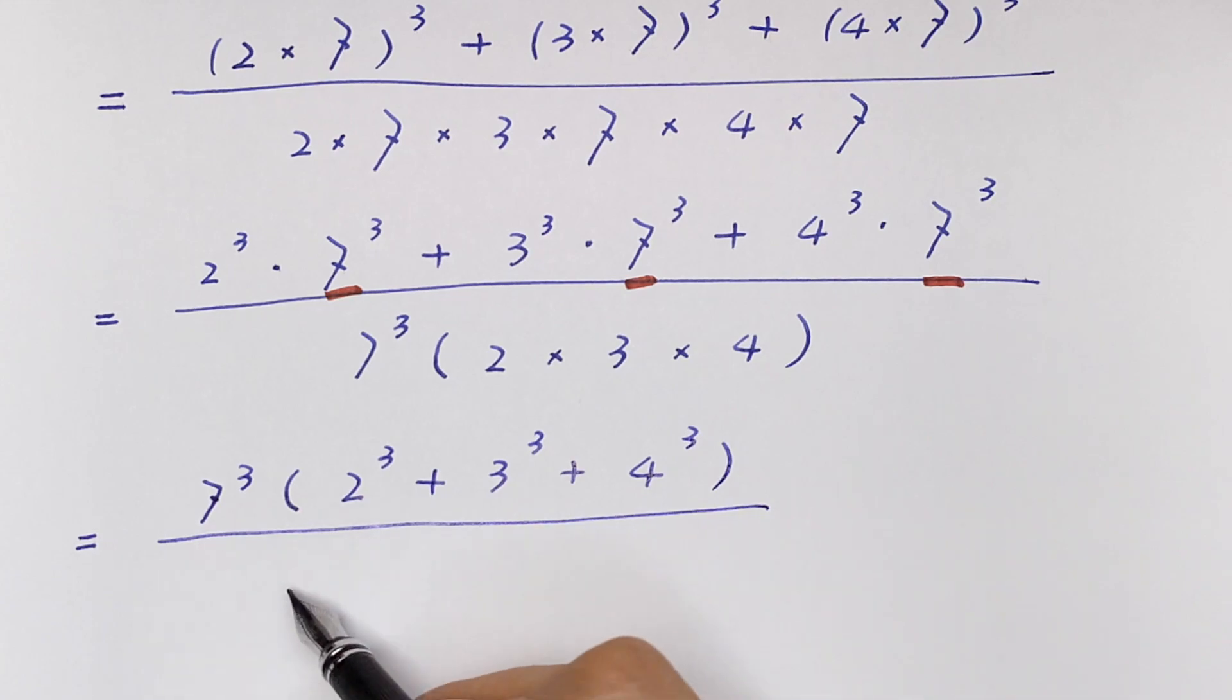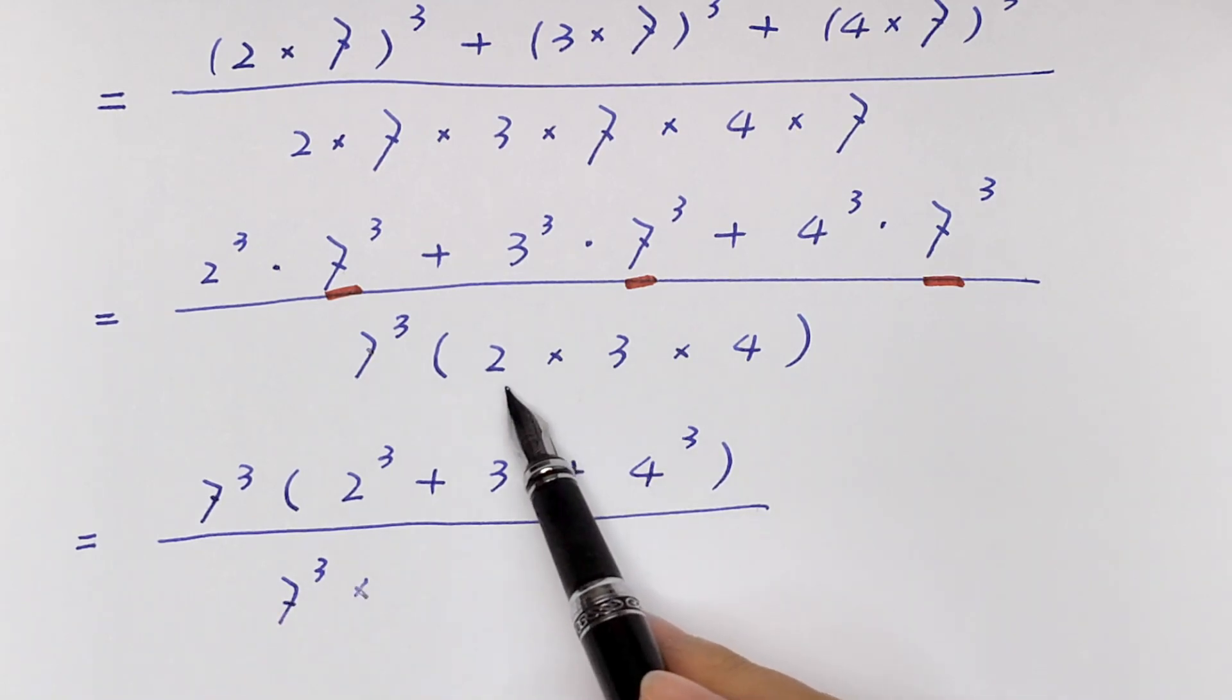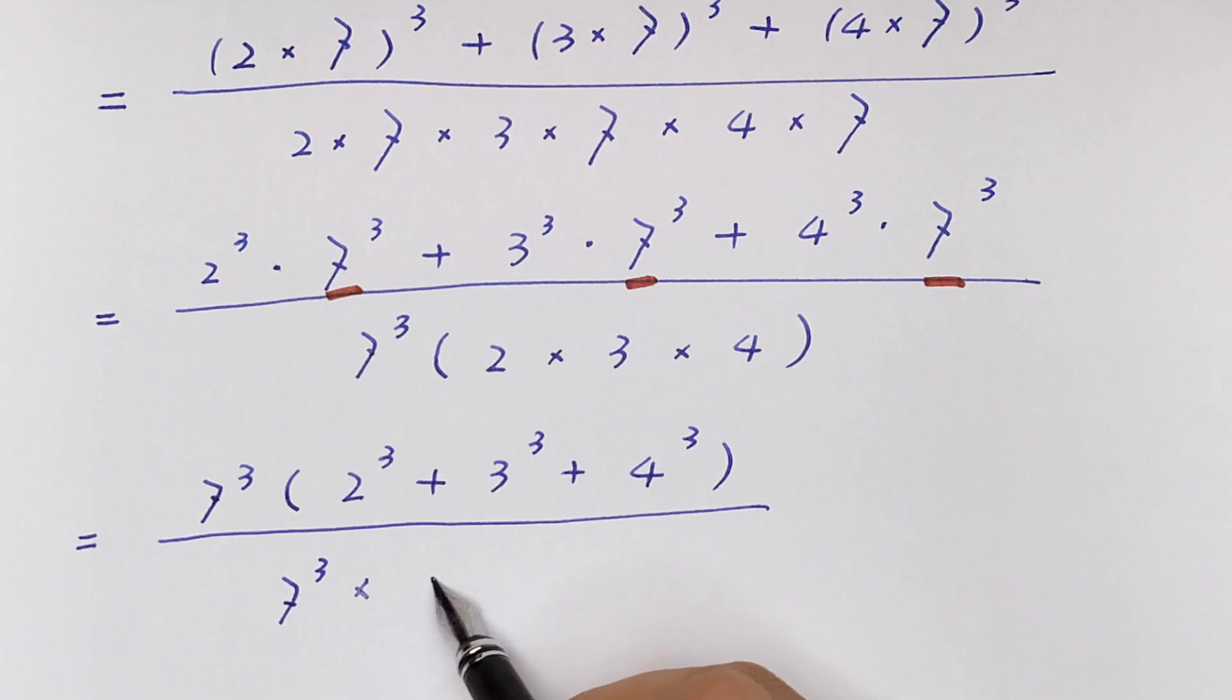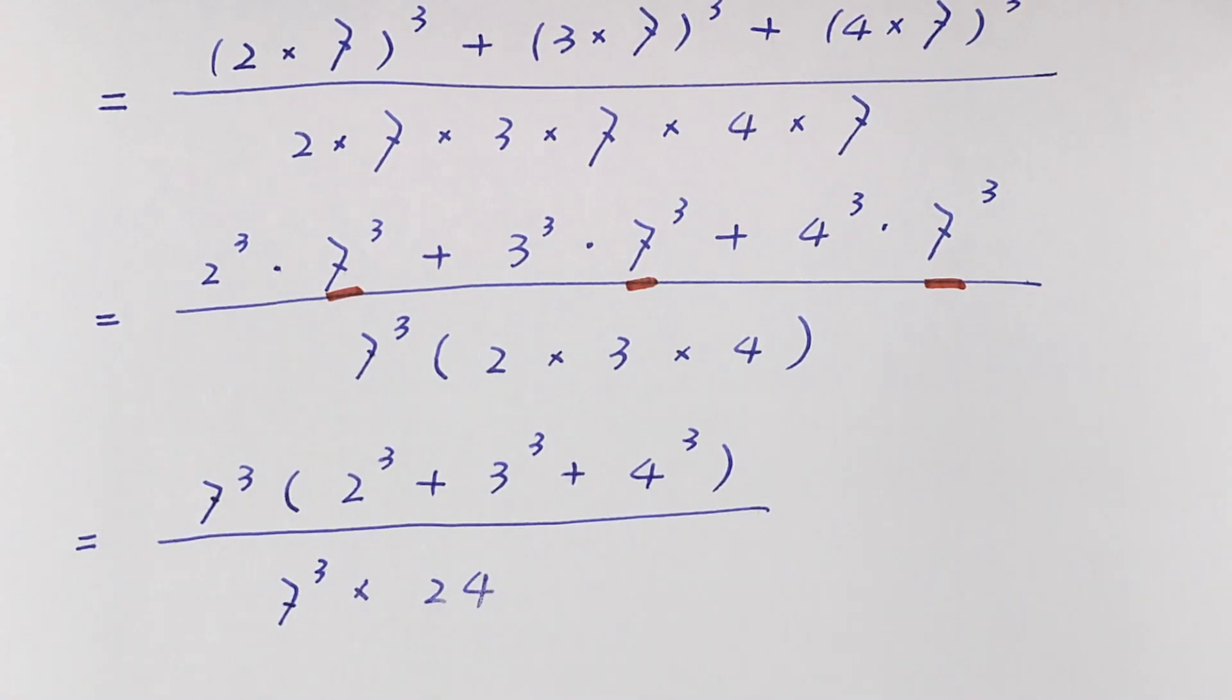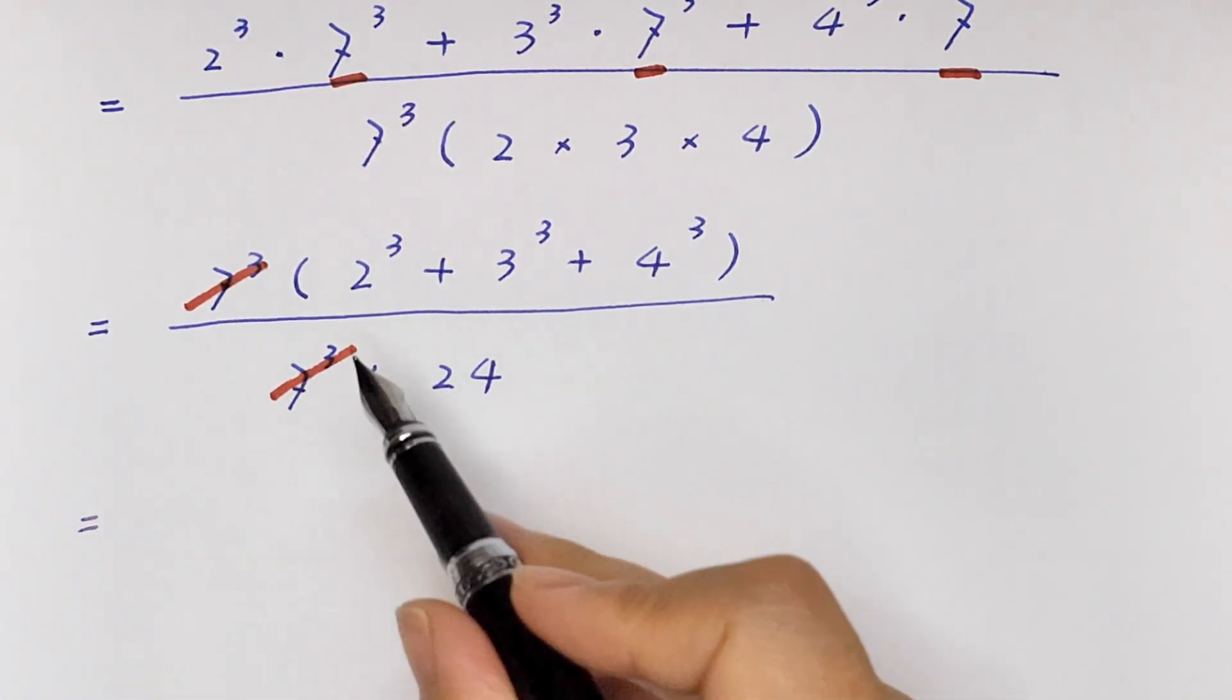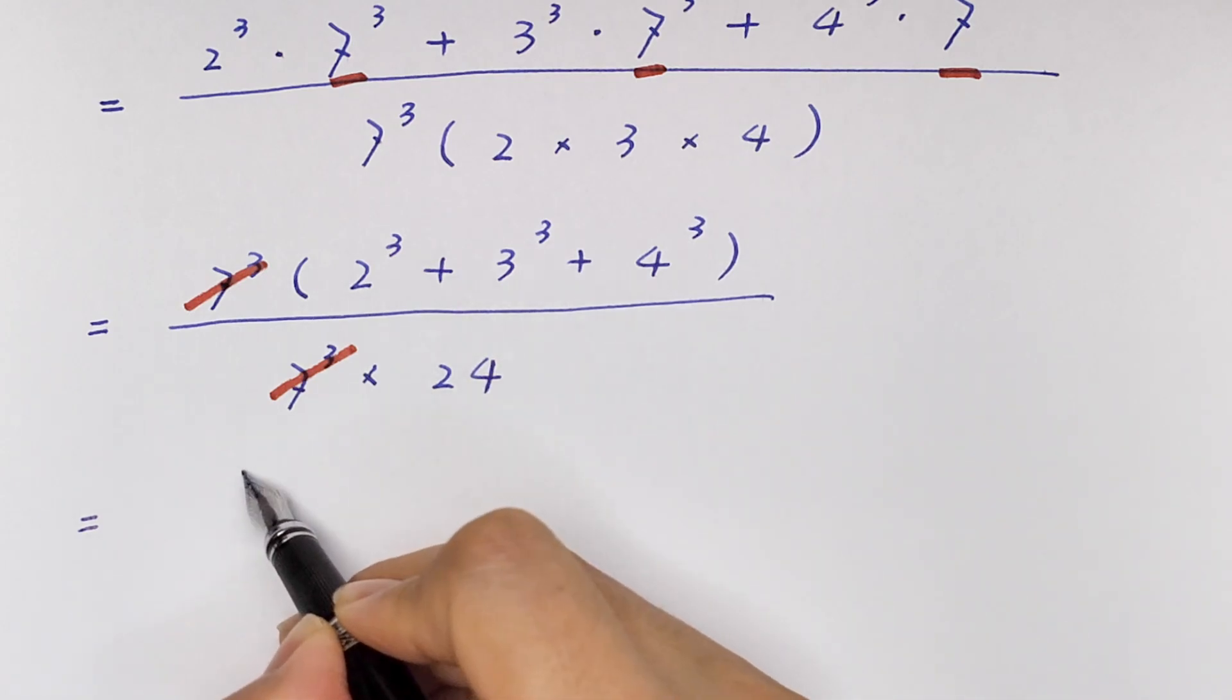Divided by 7³ × (2 × 3 × 4) equals 24. Now this will cancel with this, so it will be equal to 2³.